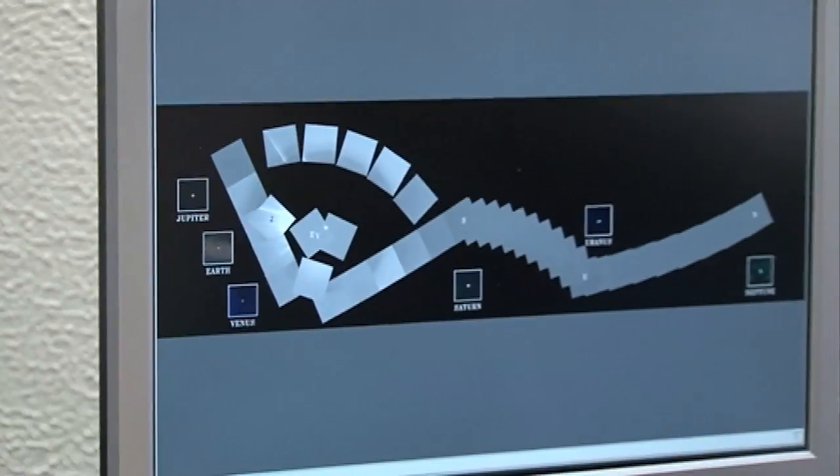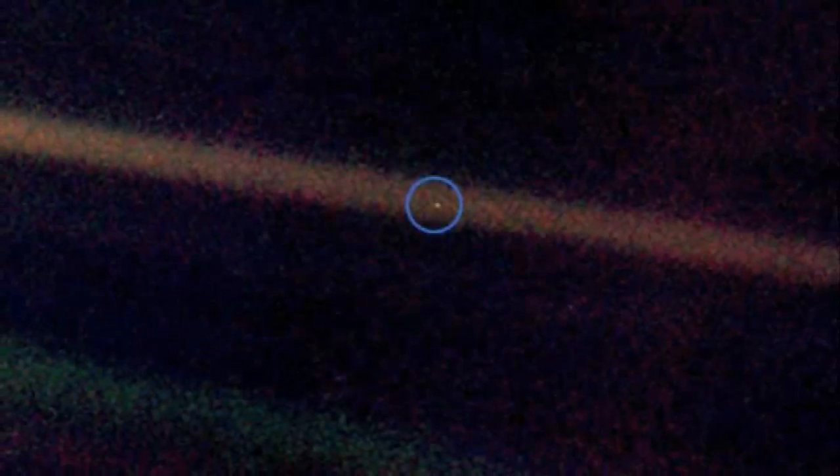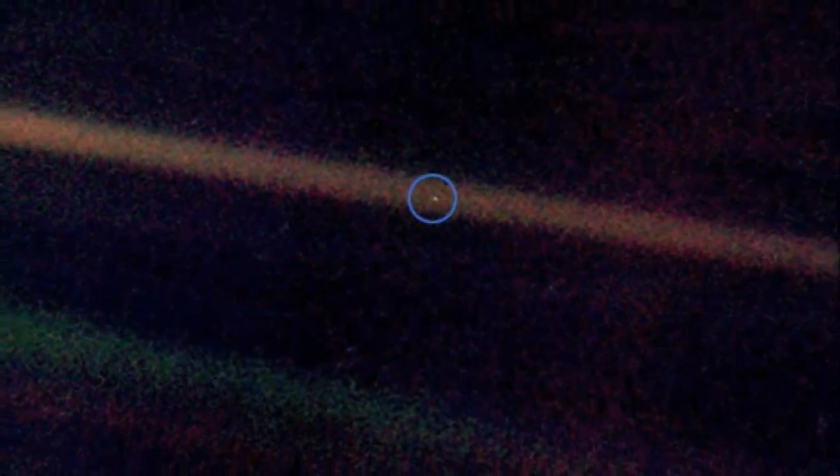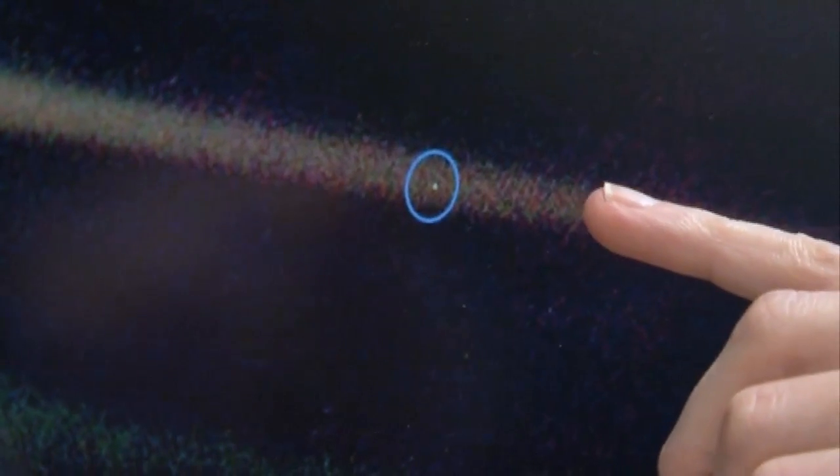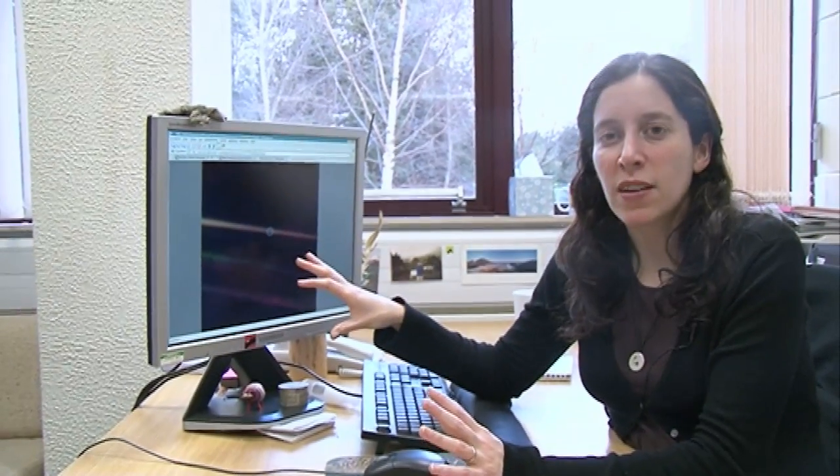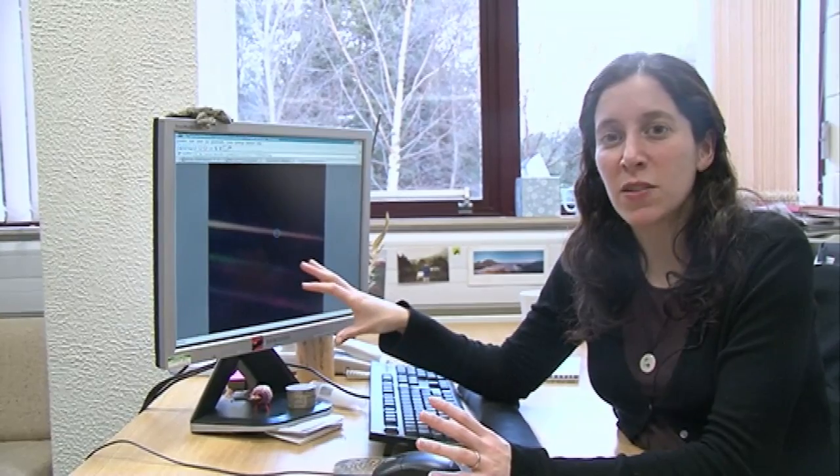If we zoom in on that one little picture, you're seeing a picture of Earth from 4 billion miles away. And Earth is this little tiny dot right in the center. The remarkable thing about this particular image is that it really gives us a perspective on our place in the solar system.